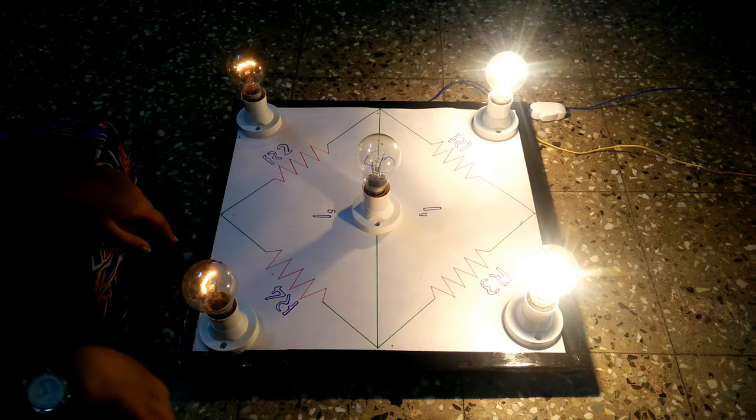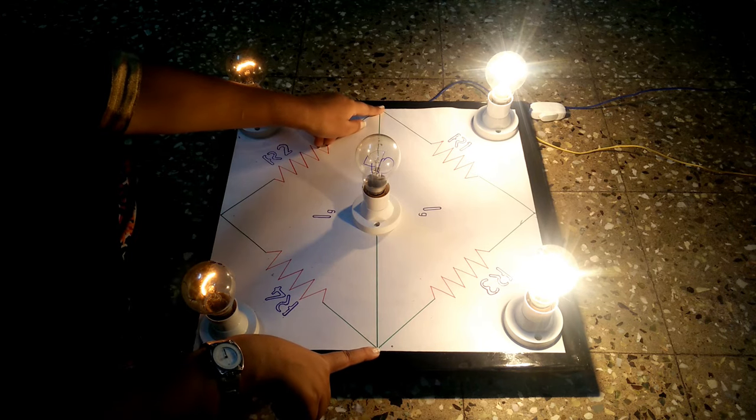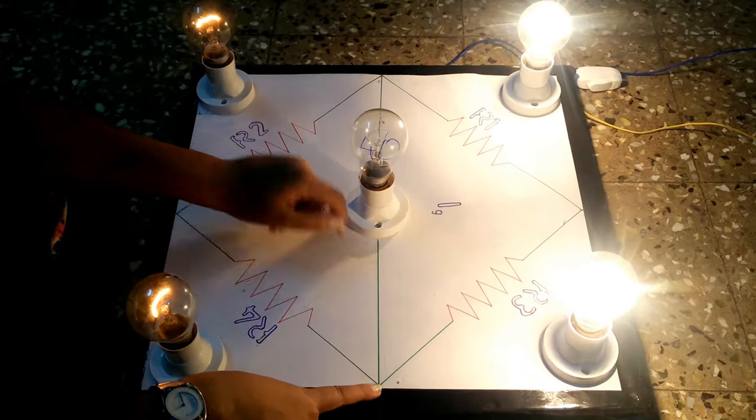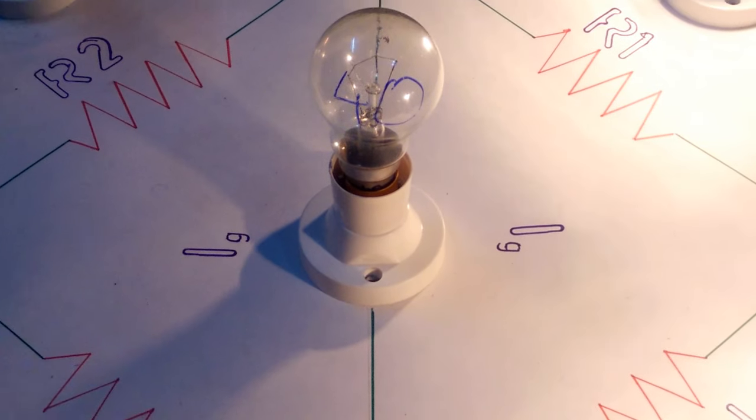Thus, at this balanced condition, there exists no potential difference between these two points. And so, there is no current flowing through this path and the bulb does not glow.